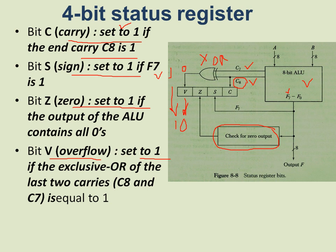The sign bit S is set to 1 if the leftmost bit of the result is 1, indicating a negative value. If the sign bit is 0, the value is positive. The zero bit Z is set to 1 when the output of the ALU is 0, meaning the result is zero.